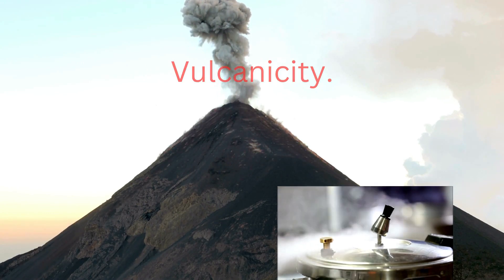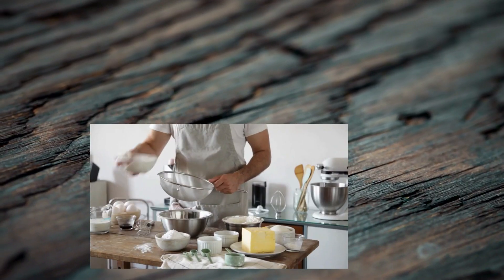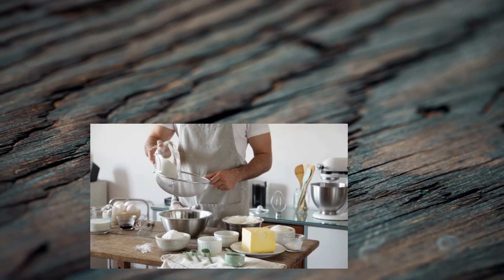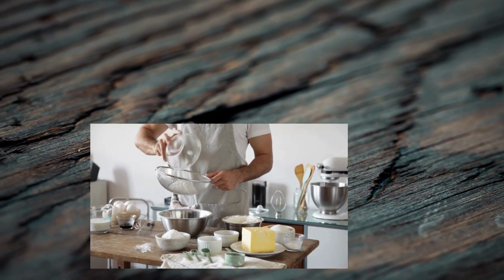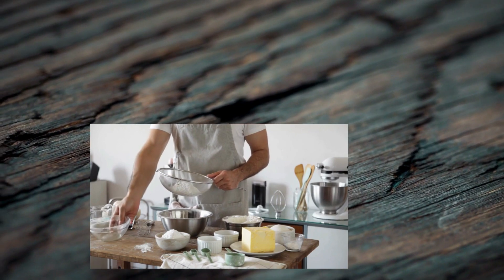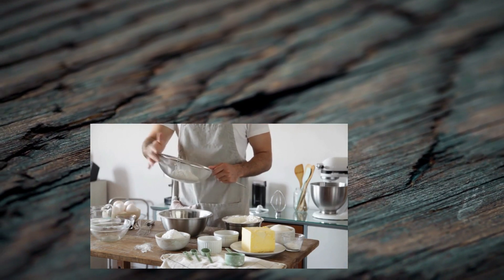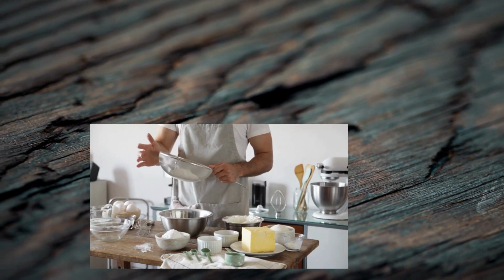The magma eventually hardens into new landforms. But what determines the final shape of these landforms? It's like baking a cake — different ingredients and baking methods create different results. Here are some key factors that influence the outcome.